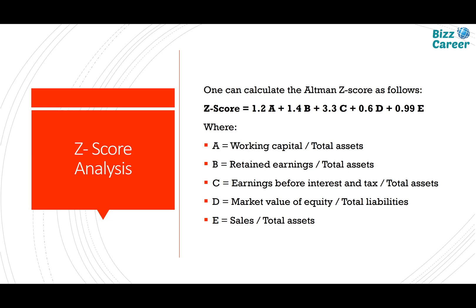The fourth component is market value of equity divided by total liabilities — that is, market capitalization divided by total liabilities — with a weight of 0.6. The fifth is sales divided by total assets, with a weight of 0.99. Among these, the third component — EBIT divided by total assets — contributes the most, followed by retained earnings divided by total assets, then working capital, and finally sales to total assets. Comparatively less important is total equity divided by total liability.